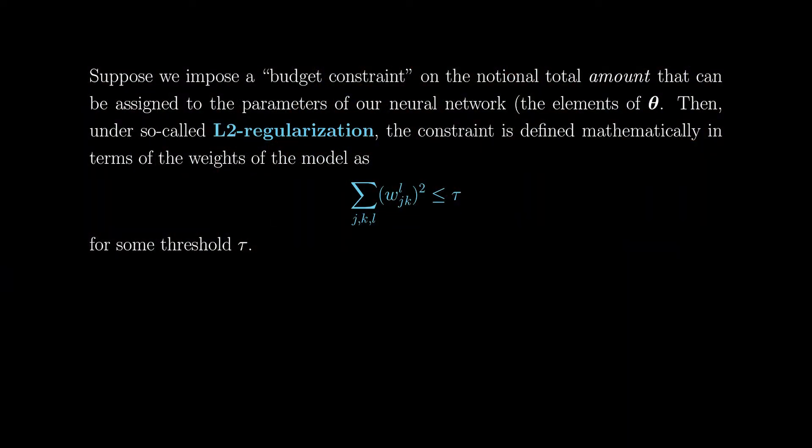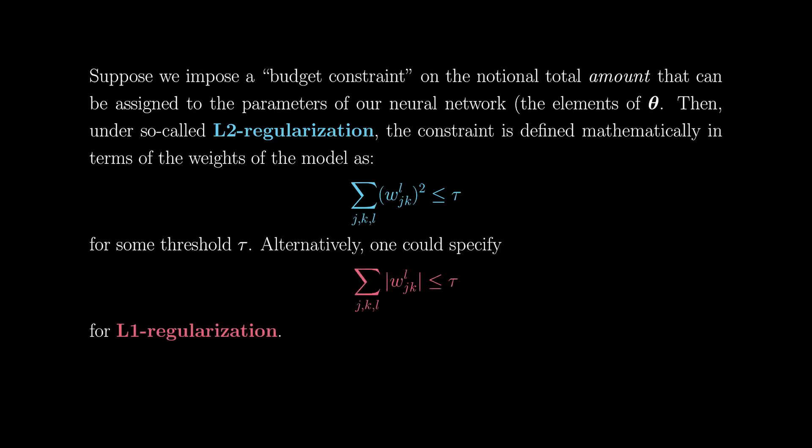We'll concern ourselves with two particular forms of regularization, both defined in terms of the weight parameters of our network. In the first, we tell the learning algorithm that its budget is defined as the sum of the squares of the weight parameters being less than a particular threshold. This is called L2 regularization, referring to the particular norm applied to the weights. In the second, we sum up the absolute values of the weights and impose a threshold. This is so-called L1 regularization, again referring to the L1 norm. These two forms have different effects on the parameters.